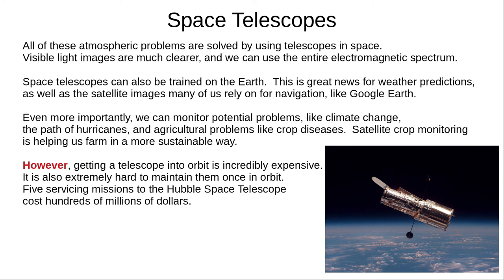Space-based observatories can also be pointed at the Earth. Using such telescopes, we have vastly improved our weather predictions, and we've made the satellite images used by so many of us for navigation, like Google Earth. Even more importantly, we can monitor problems and potential problems, including climate change, hurricanes, and crop diseases. Satellite crop monitoring is extremely important to help us farm more sustainably.